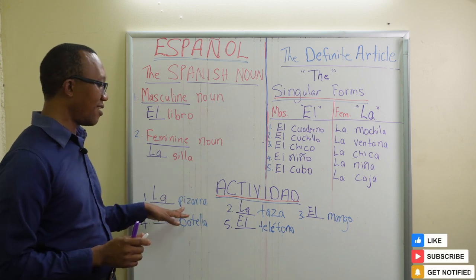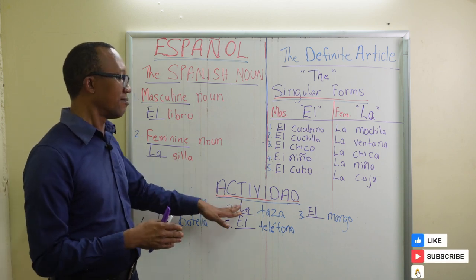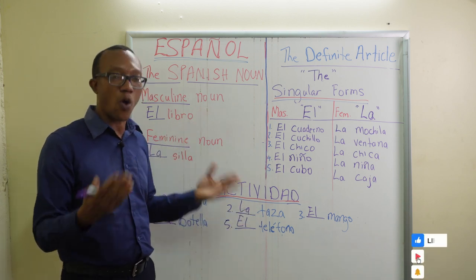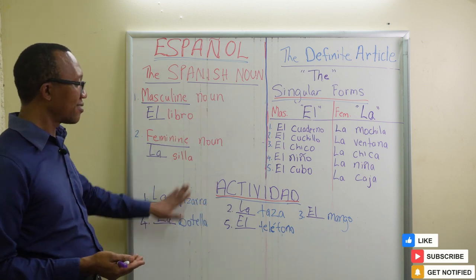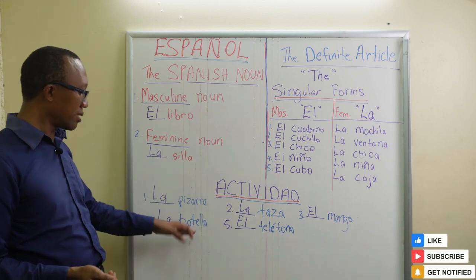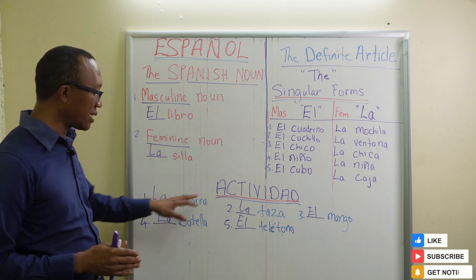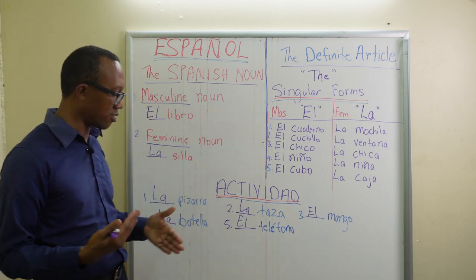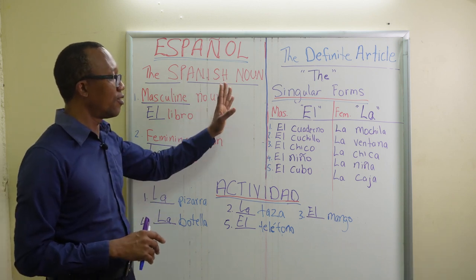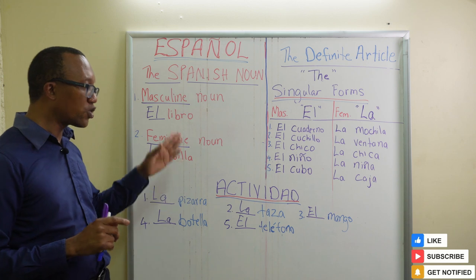Even though 'el' and 'la' mean 'the,' it doesn't mean you always translate them as 'the' in English. For example, 'la tasa' can just mean 'cup,' not necessarily 'the cup.' 'La pizarra' can just mean 'board.' 'La botella' means 'bottle' rather than 'the bottle.' You do not always translate 'el' and 'la' as 'the,' but they must always accompany nouns in Spanish.